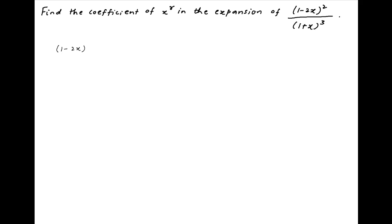The given expression (1 minus 2x) whole square divided by (1 plus x) whole cube can be written as 1 minus 4x plus 4x square, which is the expansion of the numerator, times (1 plus x) raised to the power minus 3.